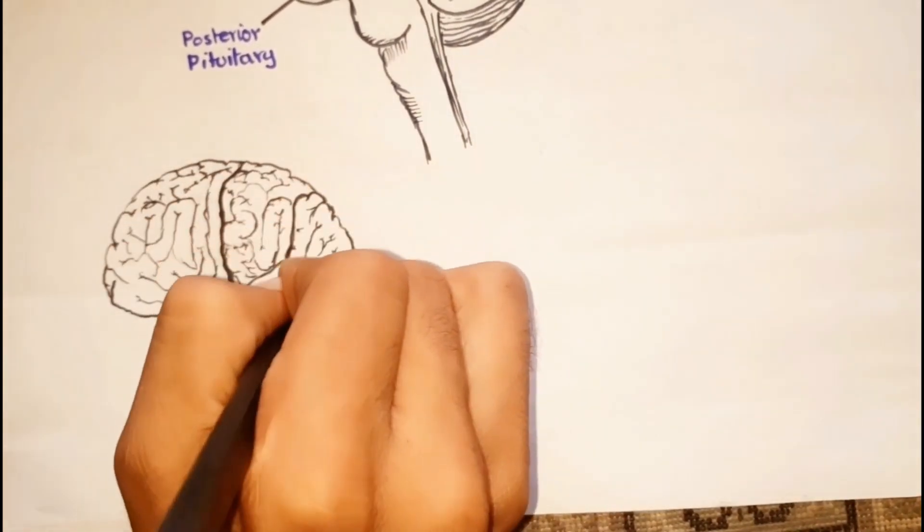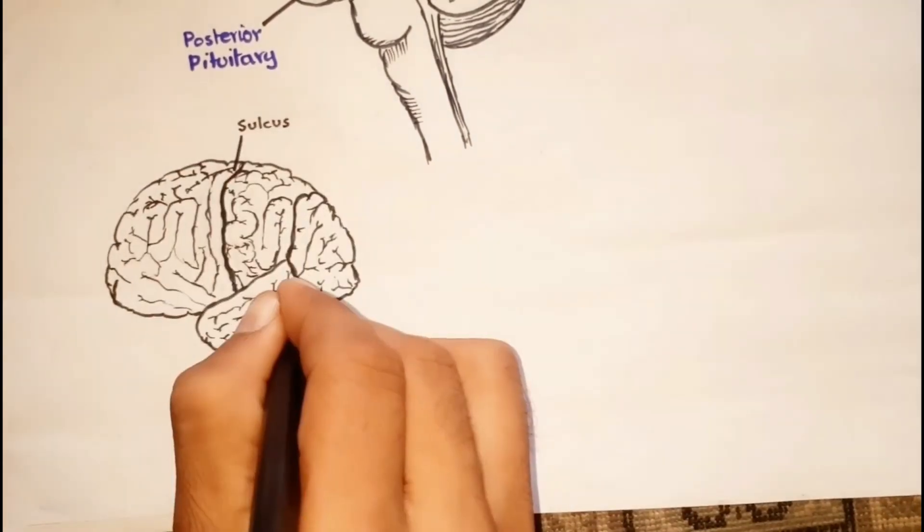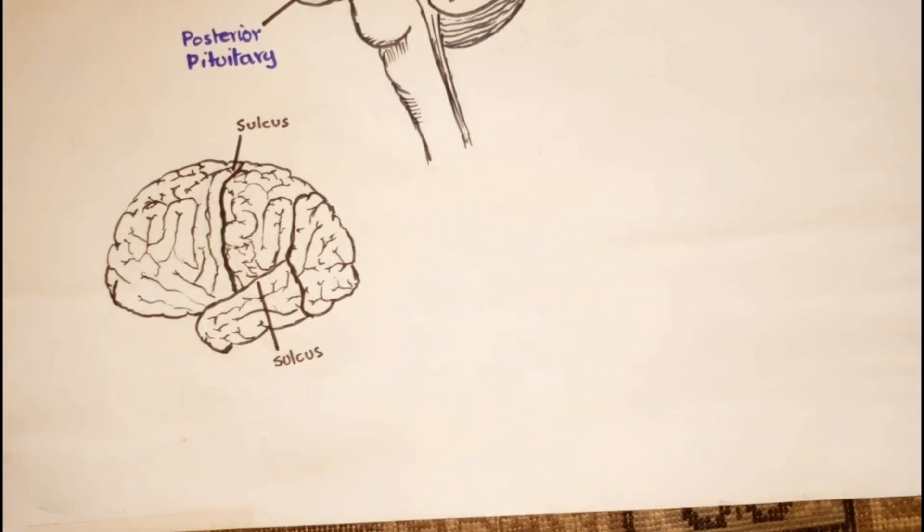These lobes are formed due to shallow grooves which are called sulcus and separate these lobes from one another. These are named after the bones of the skull which cover them.